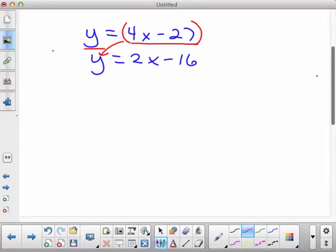So if you recopy the bottom equation with the 4x minus 27 substituted, it would look something like this. 4x minus 27 equals 2x minus 16.